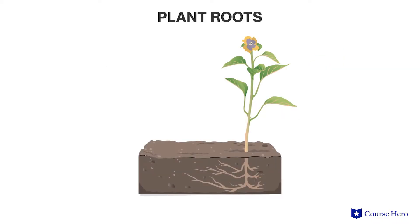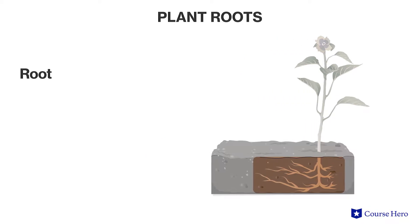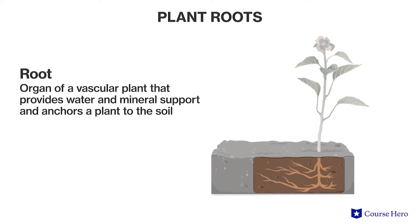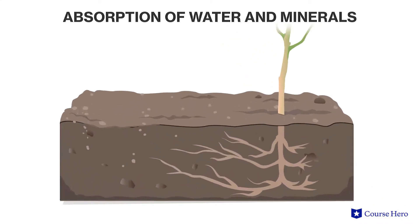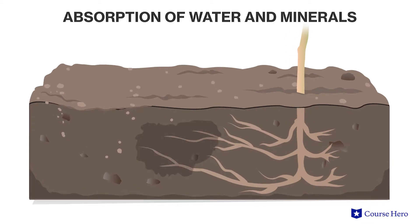Plants are anchored into the ground by structures called roots. A root is an organ of a vascular plant that, in addition to anchoring the plant to the soil, provides water and mineral support to the plant. Although the entire root system helps anchor a plant, usually the absorption of water and minerals happens near the tips of the roots, where a large number of tiny root hairs greatly increase the surface area of the root.